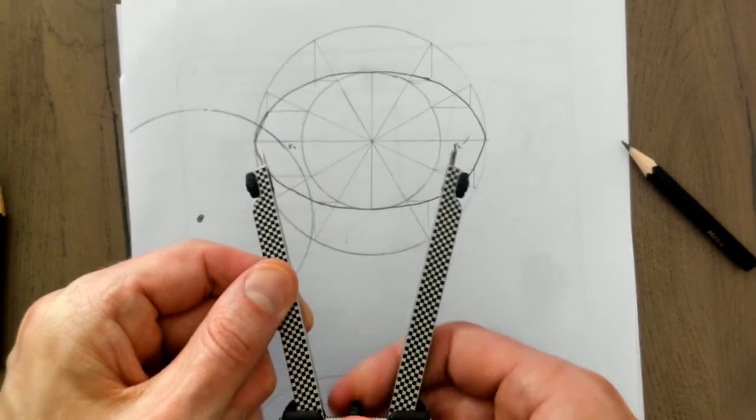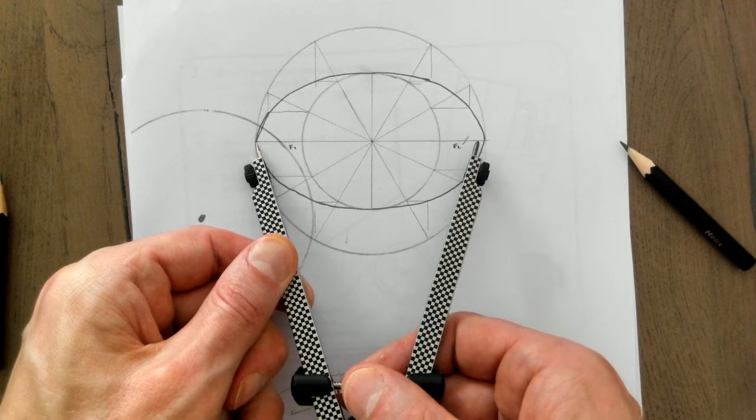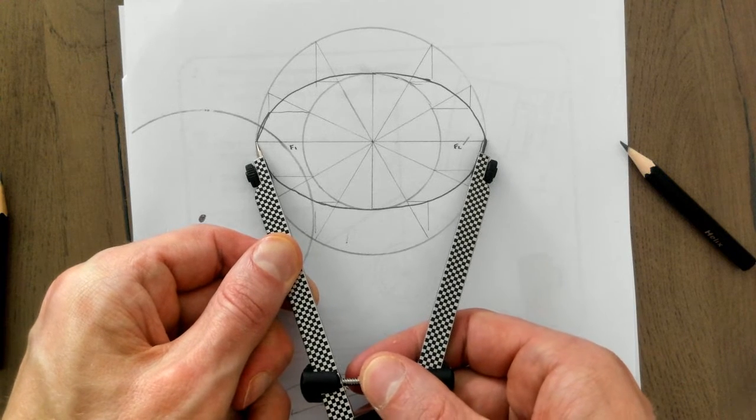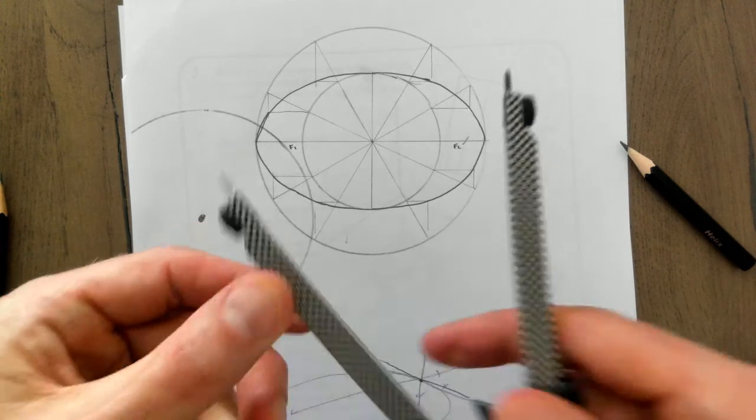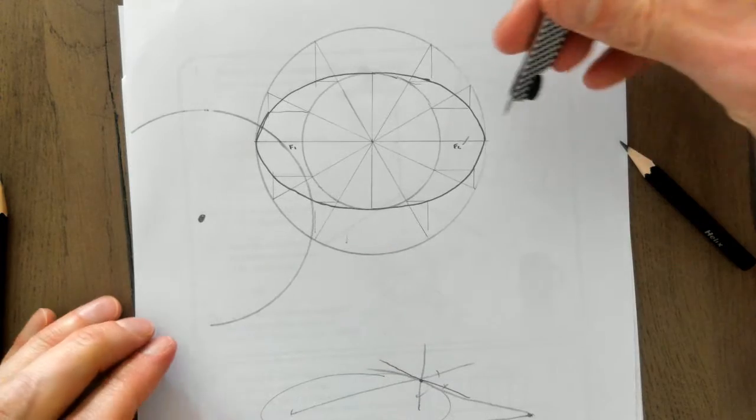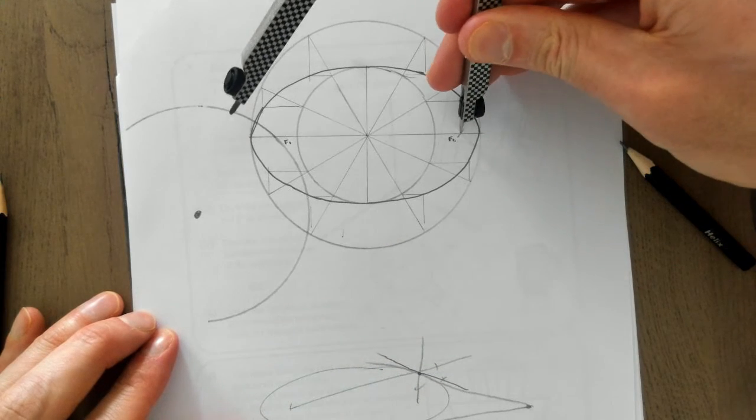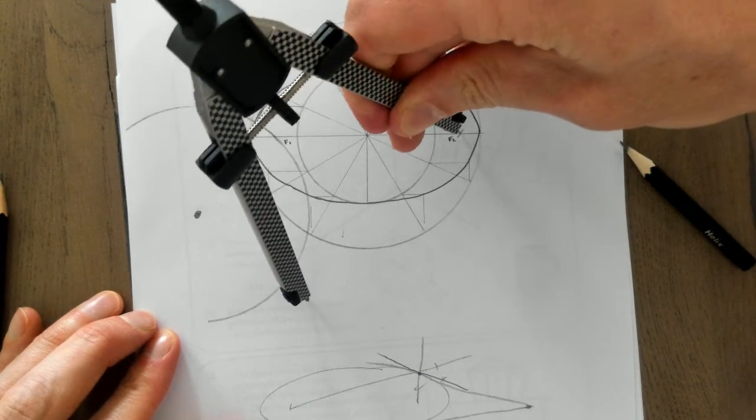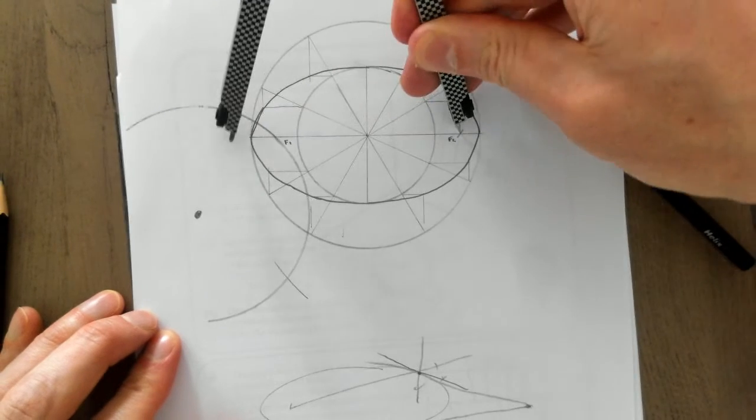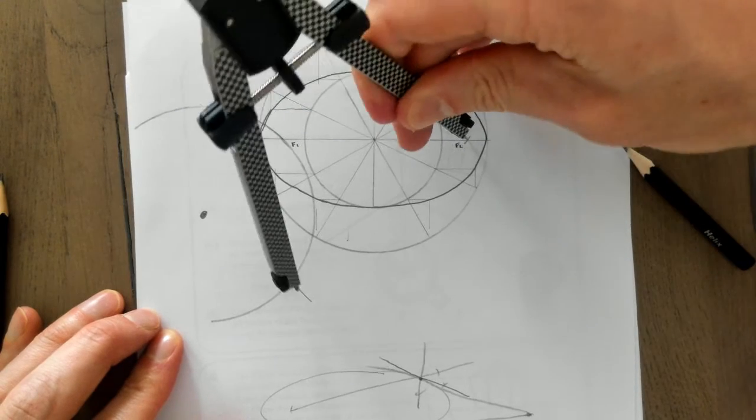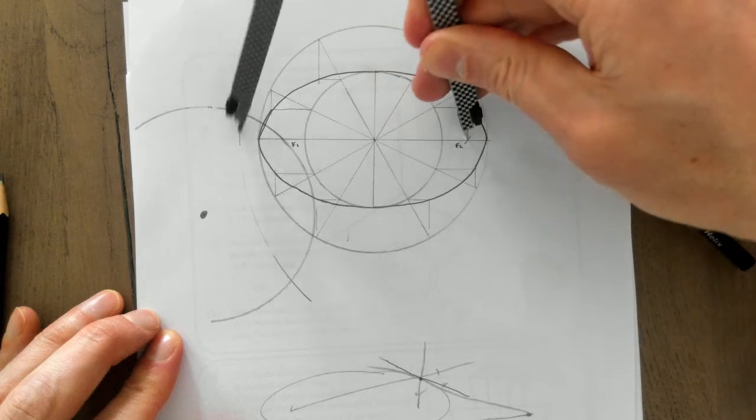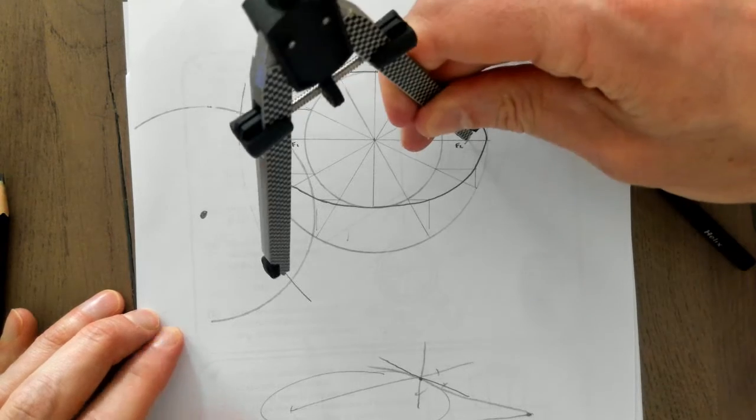Set the compass at full major axes. Okay? Full major axes there. Put the pin at the furthest focal point. And get a crossover between this arc here and two places. Okay? I'll explain why in a second. Alright? So you're doing a big arc there to get a crossover between the two arcs we've just done.